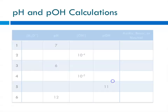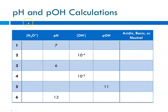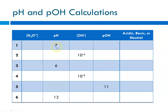The first worksheet has a table, and each question gives you one piece of information. Remember that pH plus pOH has to equal 14, so if you know one you can get to the other. The hydronium ion concentration is 10 to the minus pH, and the hydroxide ion concentration is 10 to the minus pOH. If pH is 7, it's neutral; greater than 7 is basic; less than 7 is acidic. If you're given the concentration, pH is minus the log of the hydronium ion concentration, and pOH is minus the log of the hydroxide ion concentration.